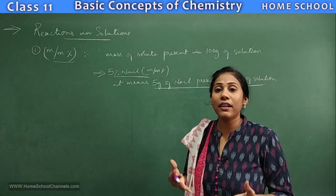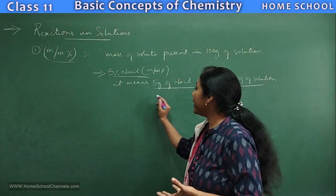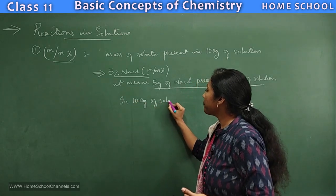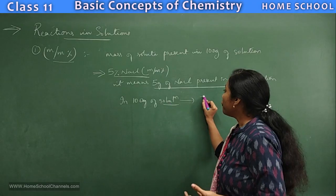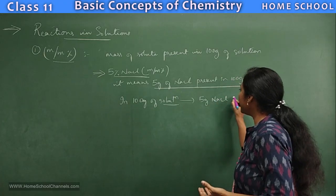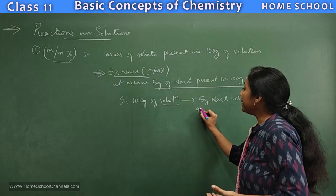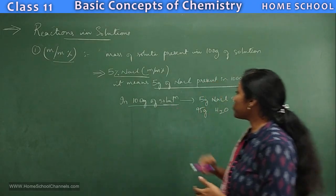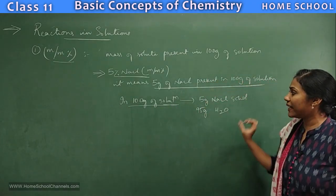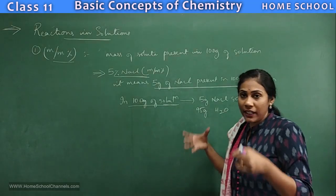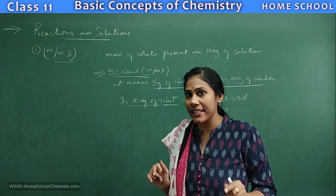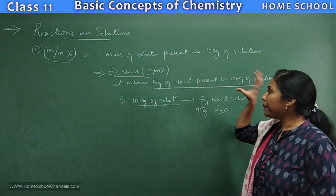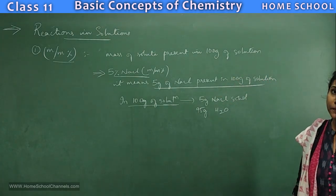To understand the in-depth meaning: in 100 grams of solution, you have 5 grams NaCl (solute) and the remaining 95 grams is water (solvent). So in 100 grams of solution, 5 grams is solute and 95 grams is the liquid used to dissolve it.